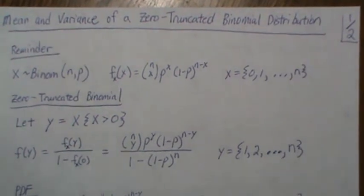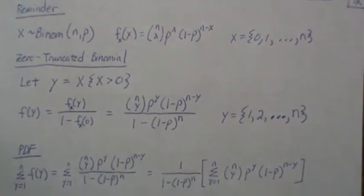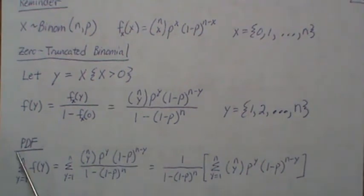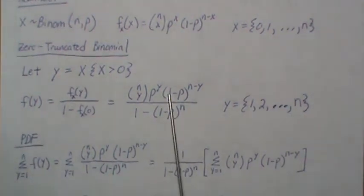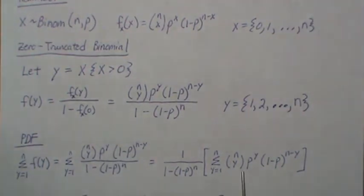You might ask, is it really a probability mass function? Let's check it. So let's sum our probability mass function from 1 to n and it should sum to 1. We just plug in the formula. The denominator is not indexed by Y so it can come out and we get this.